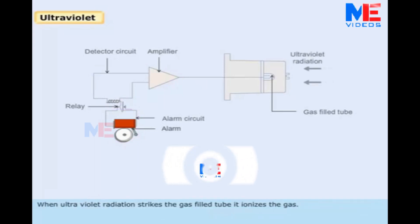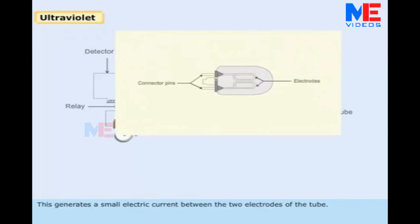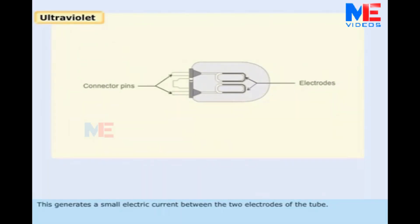When ultraviolet radiation strikes the gas-filled tube, it ionizes the gas. This generates a small electric current between the two electrodes of the tube.